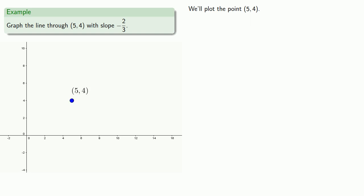Since we're given the slope, it's helpful to remember that slope is rise over run. And so this slope, minus 2 thirds, we can read this as minus 2 over 3, or as 2 over minus 3.